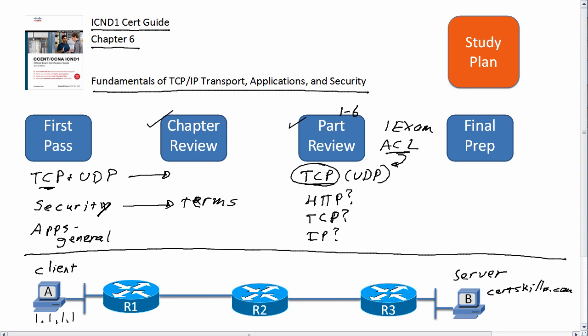Then in your final review for the whole book, once you've read all the chapters, review TCP — really review those concepts layer 2 and up about what goes back and forth between that web client and web server in the picture. And congratulations, you've made it through the first part of the first book on your way to CCENT and CCNA. Way to go. Talk to you soon.